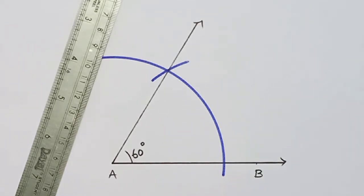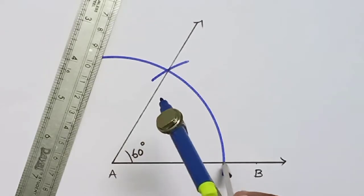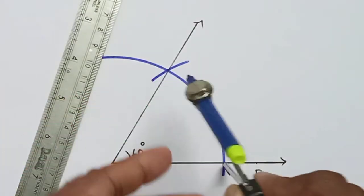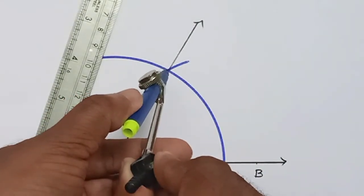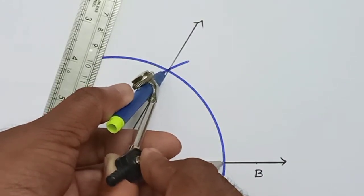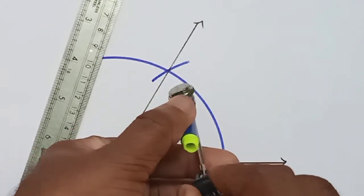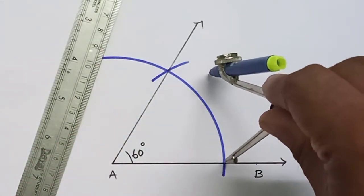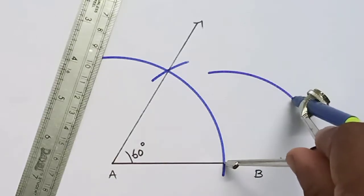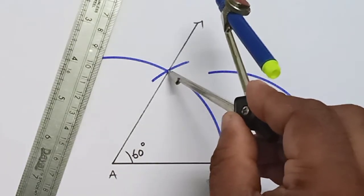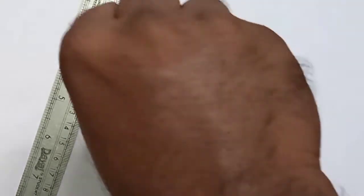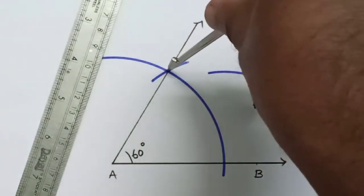To draw 30 degree angle, place the pointer on this point and take more than half of this length, more than half of these two intersecting points. So it should be more than half. Draw arc from this intersecting point, draw another arc.